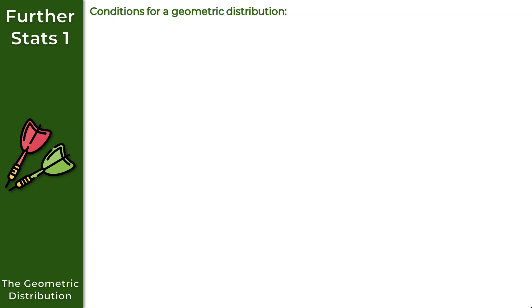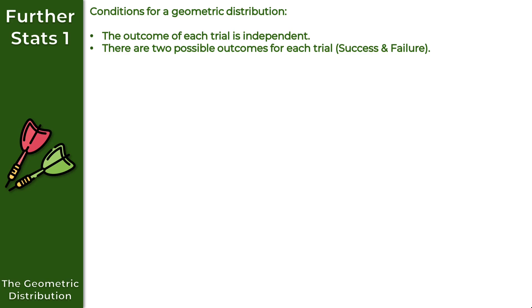Let's look at the conditions required for a geometric distribution to be appropriate. First, the outcome of each trial must be independent. Second, there are two possible outcomes for each trial, which we know as success and failure. And finally, the probability of success must be the same for each trial. It's important to be familiar with these conditions, as in an exam you might be asked to give reasons why a geometric distribution would be appropriate.